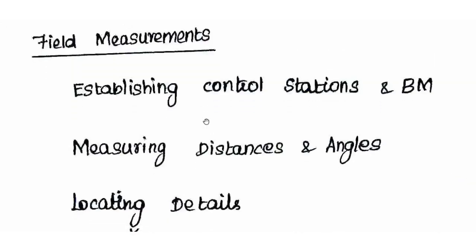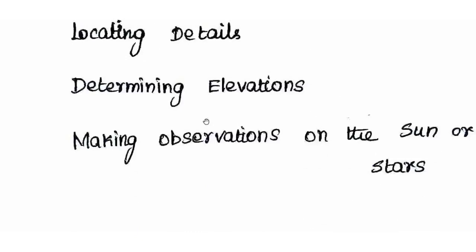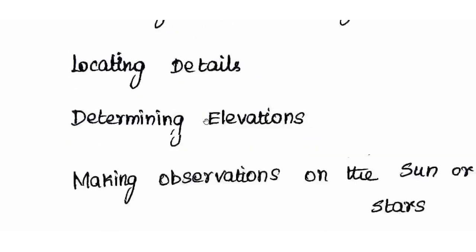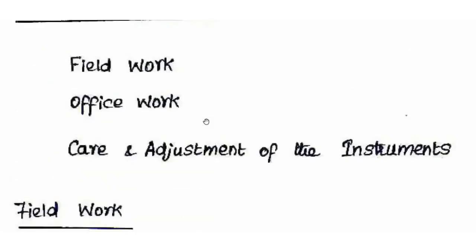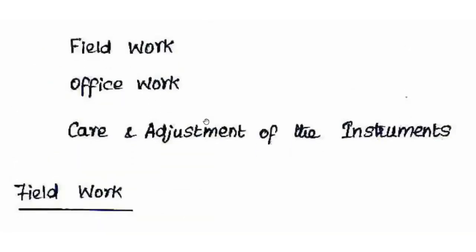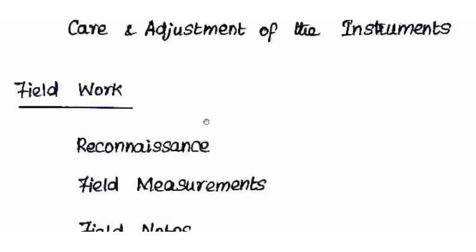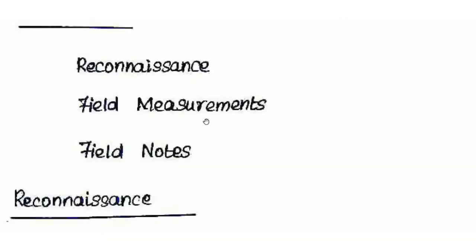In field measurements, we can also take astronomical observations — measuring latitude and longitude values — to determine the location of the area. All measurements are recorded during field measurements.